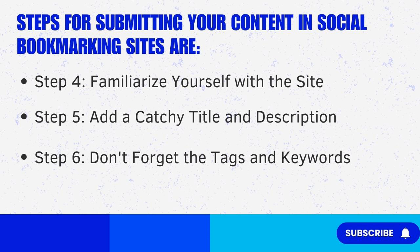Check out popular posts to get a sense of what users are interested in. Step 5 — add a catchy title and description. When submitting your content, make sure to craft a catchy title and description that accurately reflect the value of your content. A compelling headline and description can entice users to click on your submission. Step 6 — don't forget the tags and keywords. Tags and keywords help users discover your content. Use relevant keywords that are commonly searched for within the social bookmarking site. This will improve the visibility of your content.